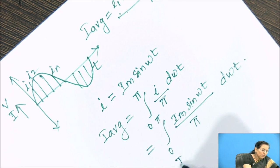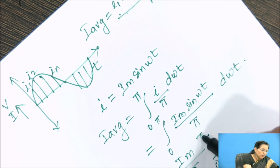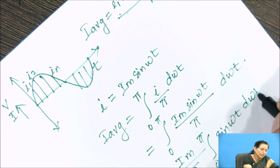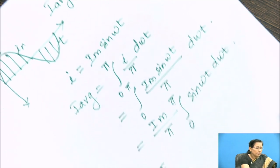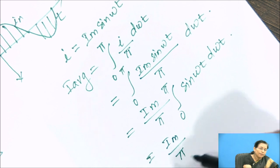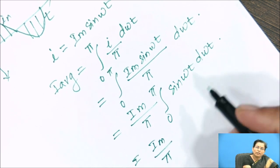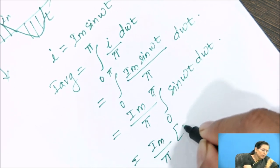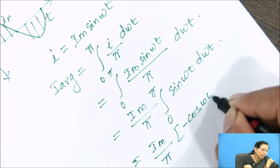So here Im by pi, integration of sin omega t is minus cos omega t.